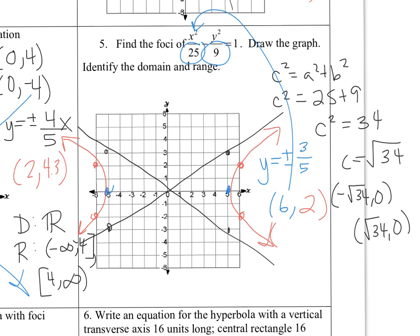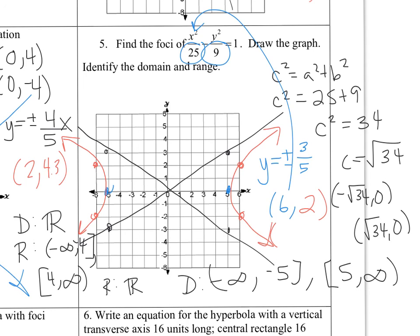The domain for this horizontal hyperbola: x goes from negative infinity to negative 5, bracket, union bracket 5 to positive infinity — since the branches stop at the vertices x equals negative 5 and x equals 5. The range is all real numbers, because this hyperbola extends up and down without restriction.